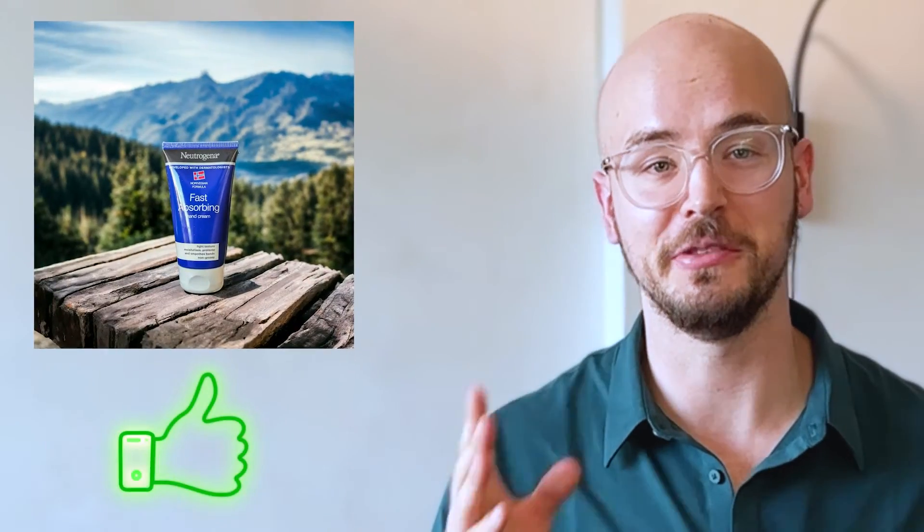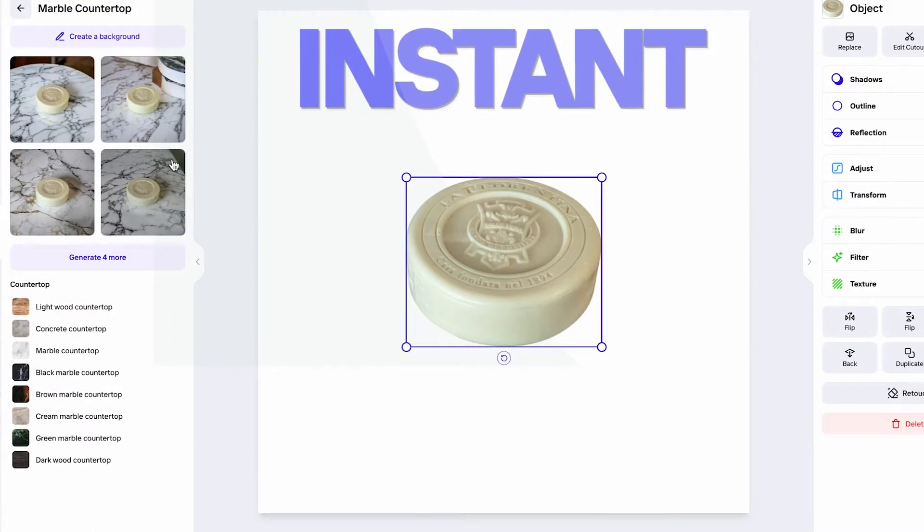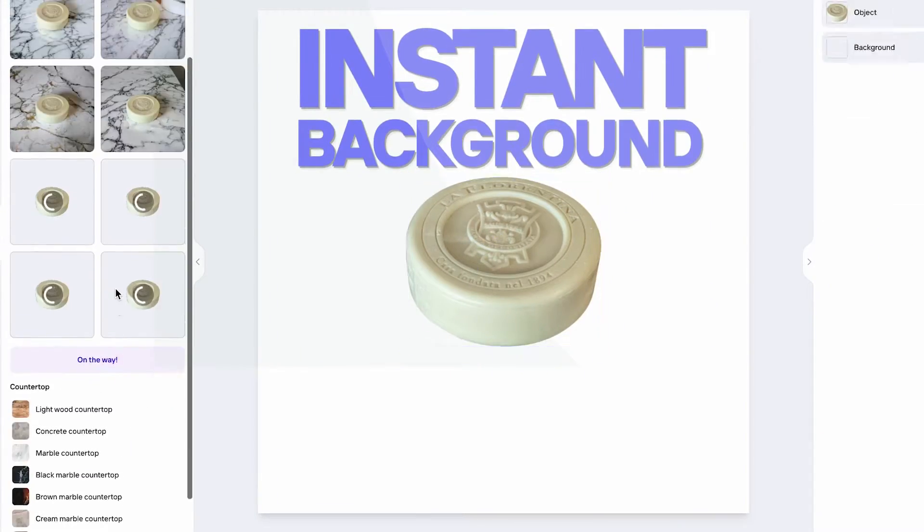Here's how to make product shots go from this to this using PhotoRoom. We're going to cover a ton of examples and we're going to use the instant AI background. Let's jump in.